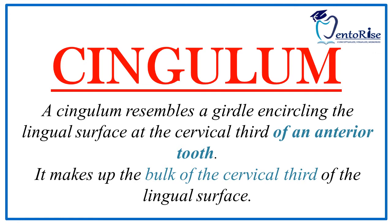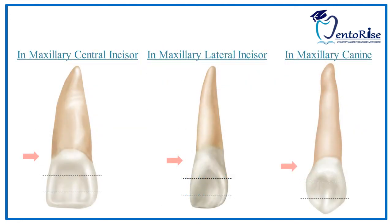Let's locate the cingulum on each individual tooth with the help of figures. Notice the elevation present on the cervical third of the lingual surface of maxillary central incisor, maxillary lateral incisor, and maxillary canine, marked in red. This area is called the cingulum and it makes up the bulk of the cervical third of the lingual surface of these anterior teeth.